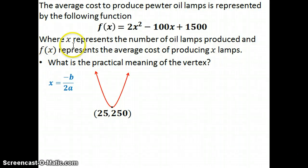I ask for the practical meaning, and we have to look up here. x represents the number of oil lamps produced, and this is my x-value. So if 25 oil lamps are produced, it costs $250. f(x) represents the average cost - $250.